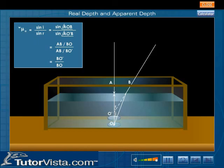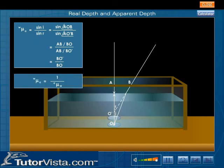BO is approximately equal to AO. AO is the real depth. W mu A is equal to 1 by A mu W.